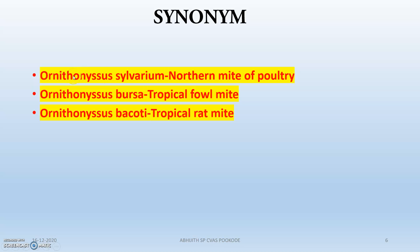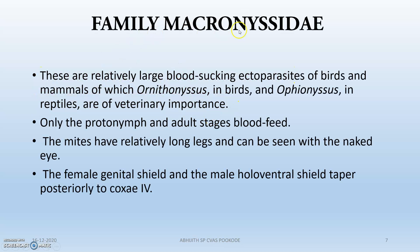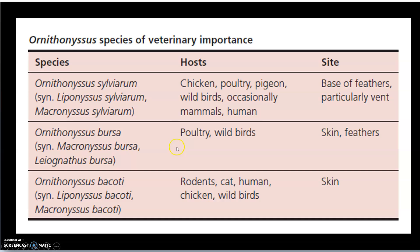The synonyms are: Ornithonyssus sylviarum, the northern fowl mite of poultry; Ornithonyssus bursa, the tropical fowl mite; and Ornithonyssus bacoti, the tropical rat mite. The family Macronyssidae are relatively large blood-sucking ectoparasites of birds, and only the protonymphs and the adult stages feed on blood — a very important point. The female genital shield and the male holoventral shield taper posteriorly to coxa 4. They have relatively long legs and can be seen with the naked eye.